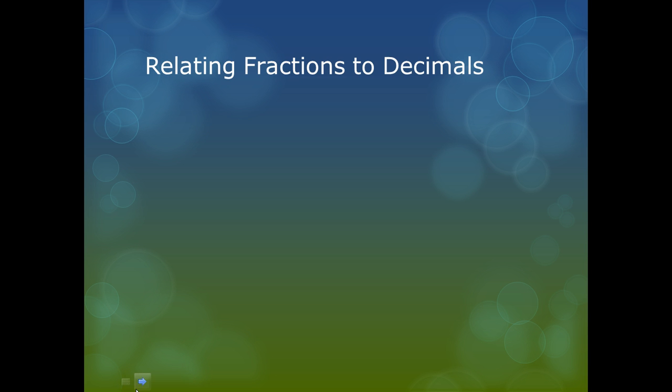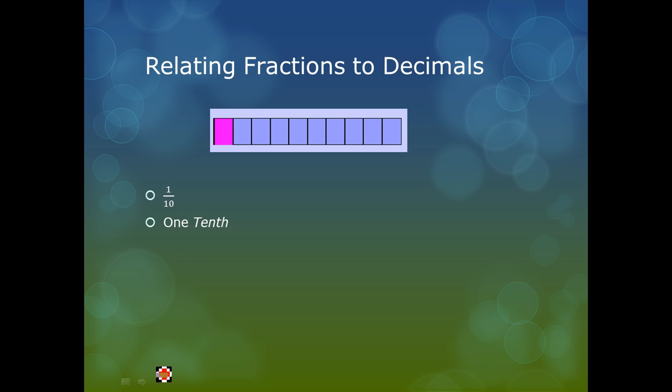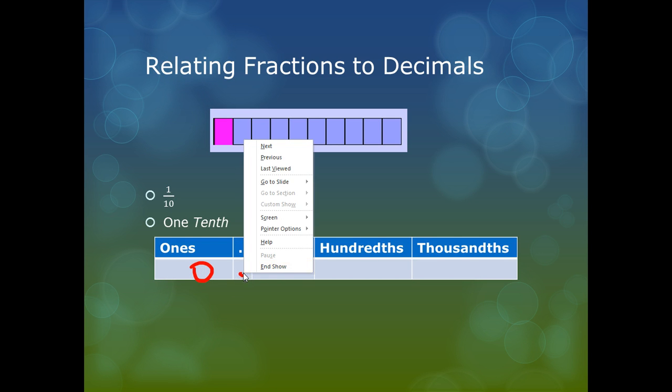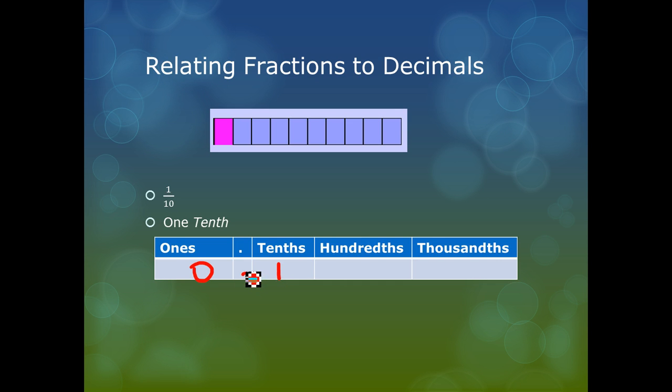So we start off with a fraction here. We have one-tenth of a whole shaded. We say this is one-tenth. Now to write this in decimal form, I just have to remember my decimal place value. I have ones, tenths, hundreds, and thousands. And so I would write one-tenth as 0.1. And that is one-tenth.